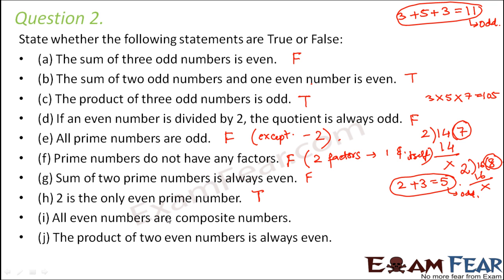All even numbers are composite numbers. Again this is false. That is because there is an exception to it and that exception is again 2. Because 2 is an even number but it is not composite.